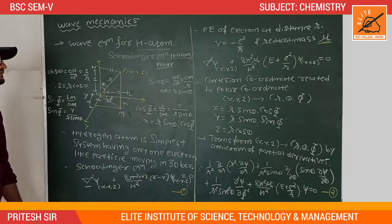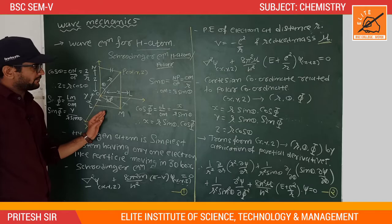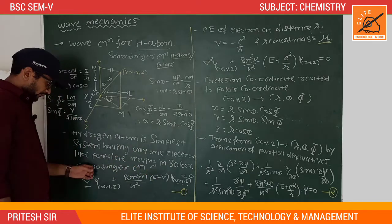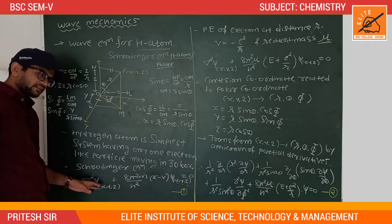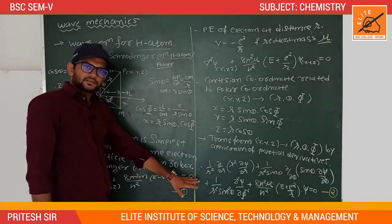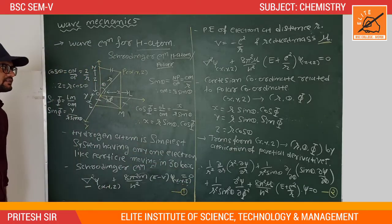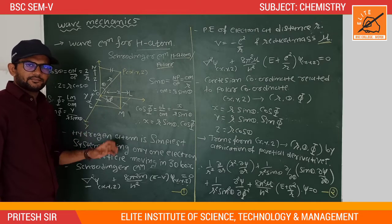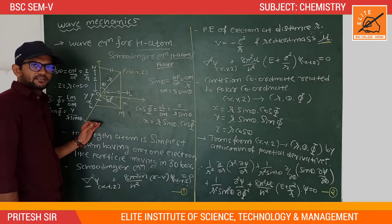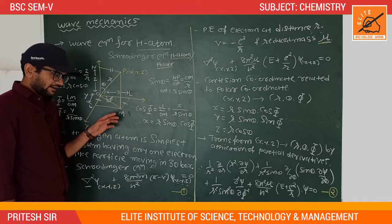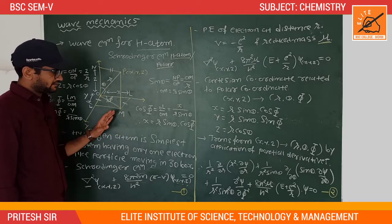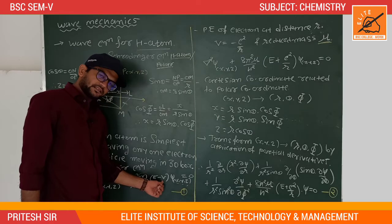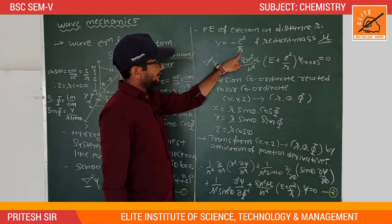Hydrogen is a simple atom with only one electron like a particle moving in a 3D box. Writing the Schrödinger equation: del-squared ψ plus (8π²m / h²)(E − V)ψ = 0. In the 3D box we assume potential energy inside is zero because there is no field force, but in this case the potential energy V is not zero. The value of V = −e²/r.